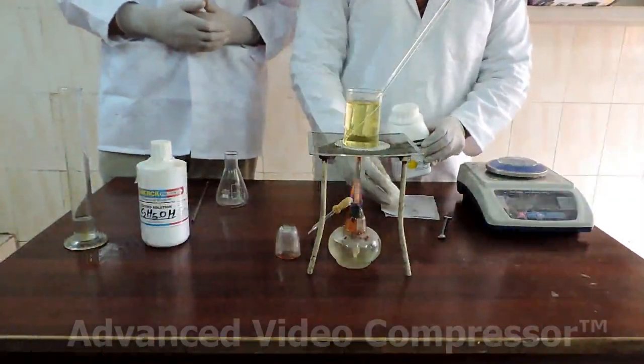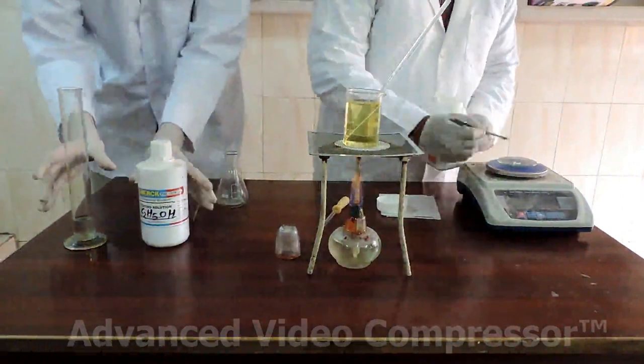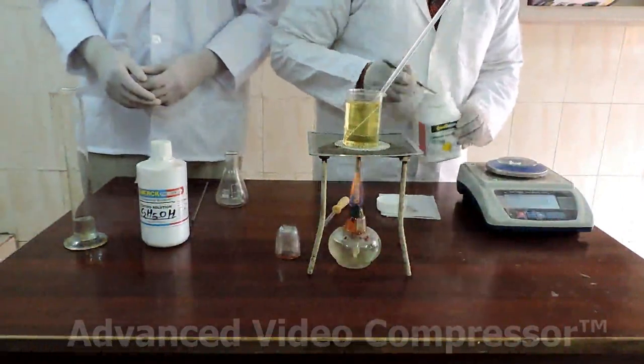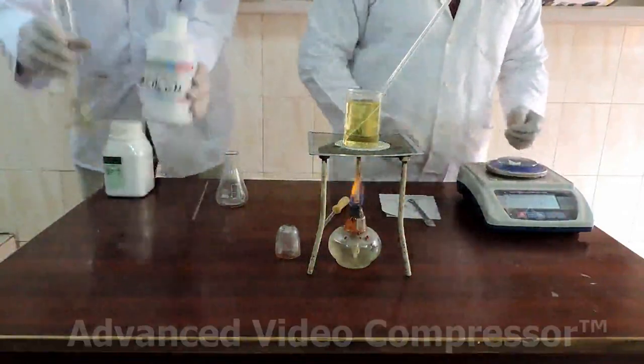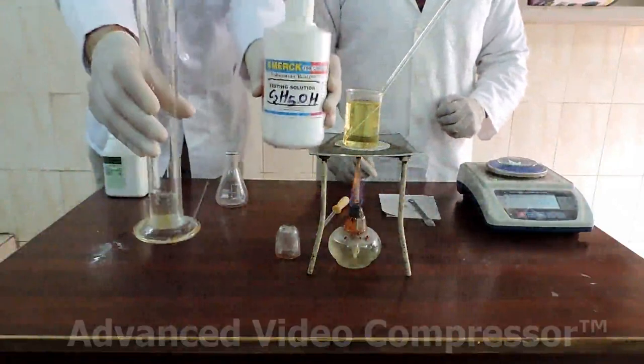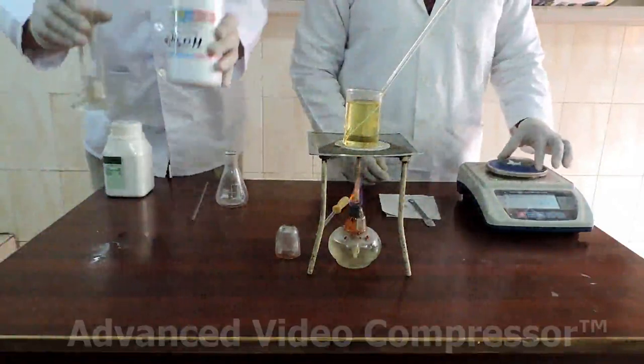In the meantime we will weigh 1 gram of potassium hydroxide and also take 20 milliliters of ethanol which you can see in the measuring cylinder.